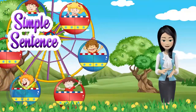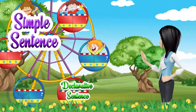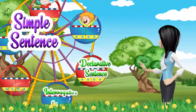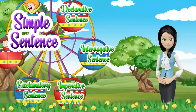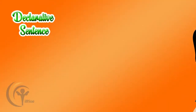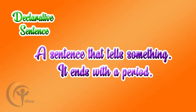Simple sentences are four kinds: we have the declarative sentence, interrogative sentence, imperative sentence, and exclamatory sentence. A declarative sentence is extremely simple and easy. It's a statement — it's something that you say. A sentence that tells something and ends with a period is always a declarative sentence.